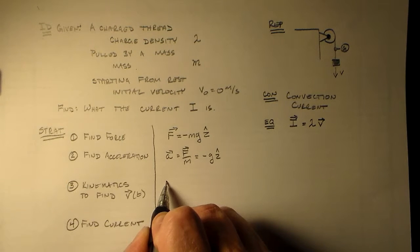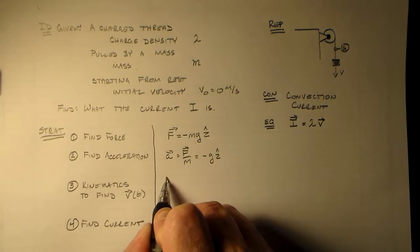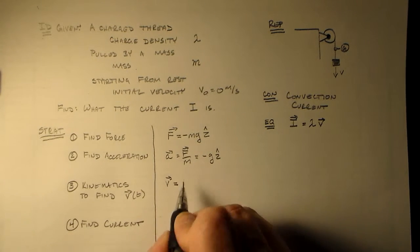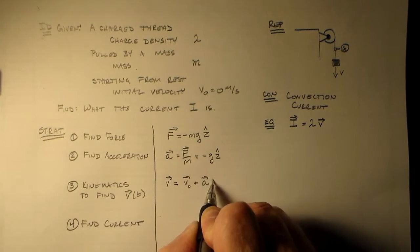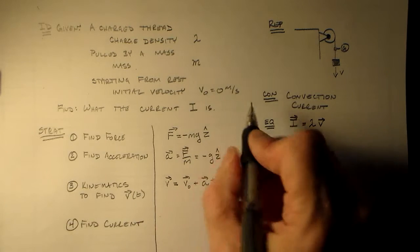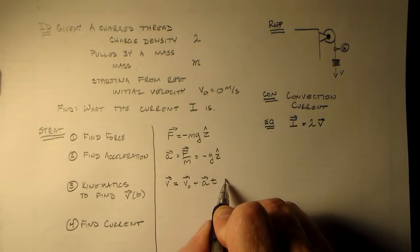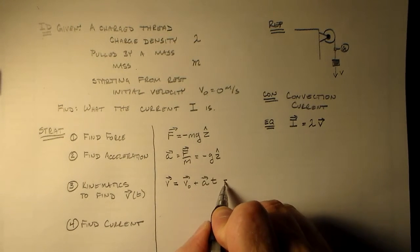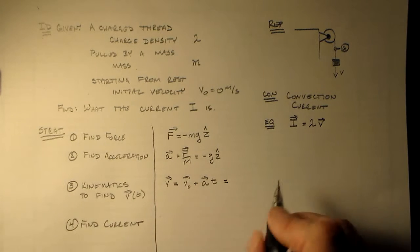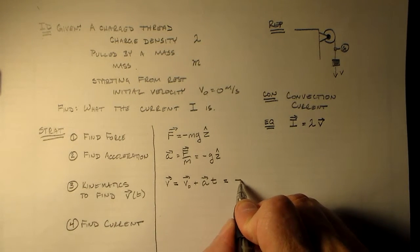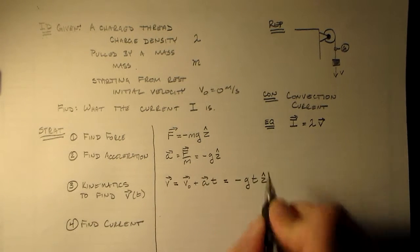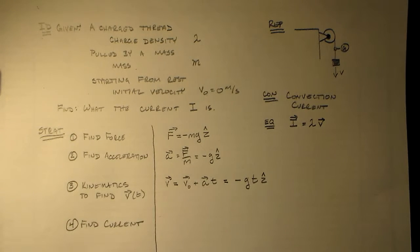So now we can just use kinematics. So our kinematics says that v is equal to v-naught plus a times t. V-naught, we said, is zero. That's initial speed here. And so we just take the acceleration and we multiply by t, so we have minus gt in the z-hat direction.